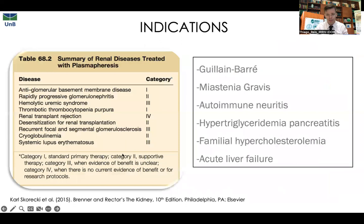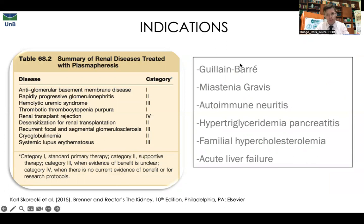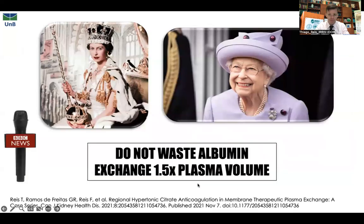Indications. We have renal indications, but usually the indications are related to autoimmune or antibody-mediated diseases such as Guillain-Barré, myasthenia gravis, or any other autoimmune condition mediated by antibodies.